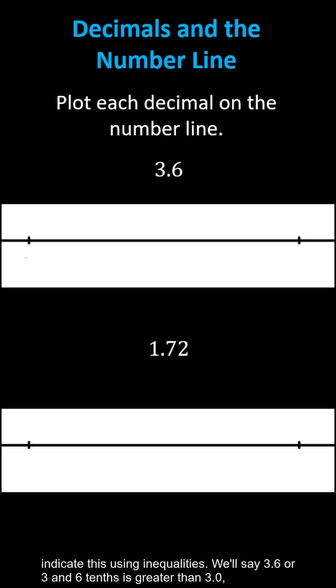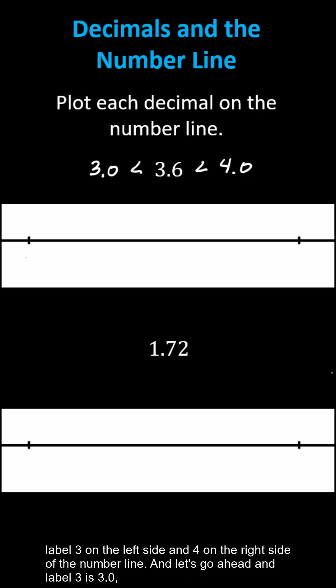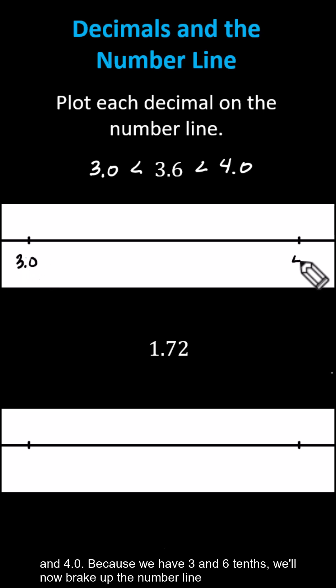Let's indicate this using inequalities. We'll say 3.6 is greater than 3.0 and less than 4.0. Because of this, we'll label 3 on the left side and 4 on the right side of the number line. And let's go ahead and label them as 3.0 and 4.0.